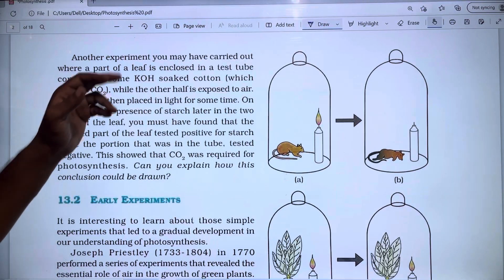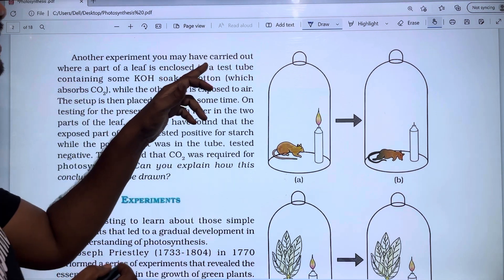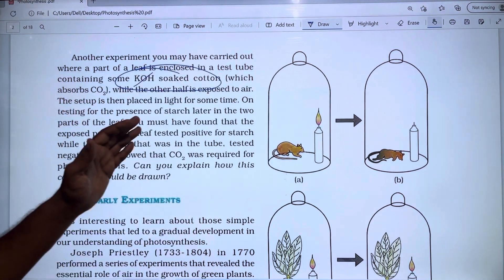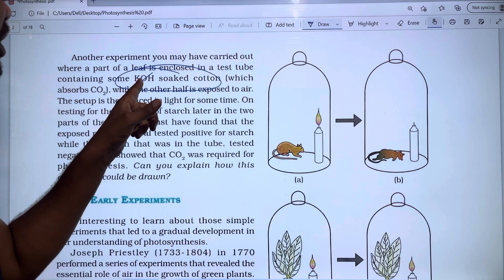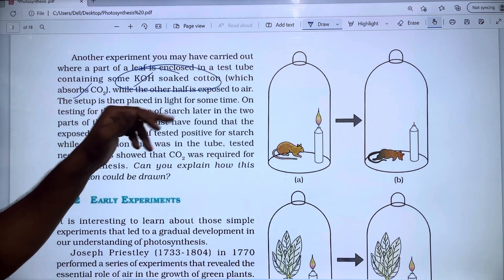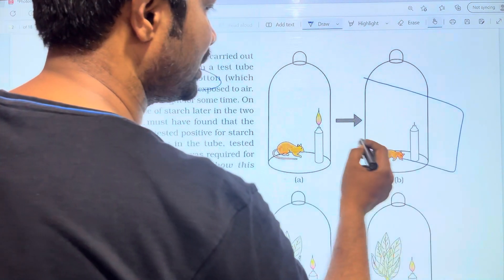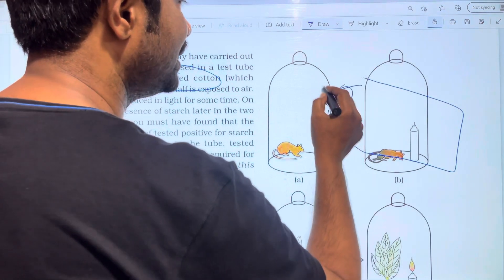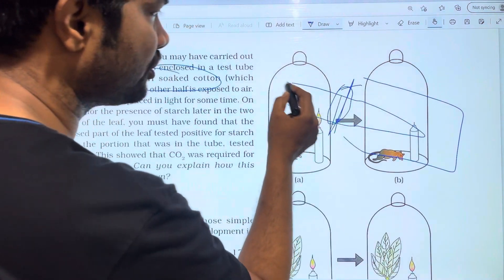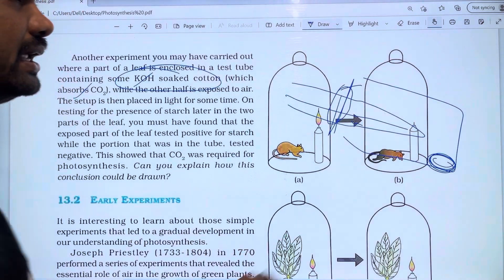Next, you may have carried out another experiment. One part of a leaf is enclosed in a test tube containing some KOH soaked cotton, which absorbs CO2. The other leaf is exposed to air.